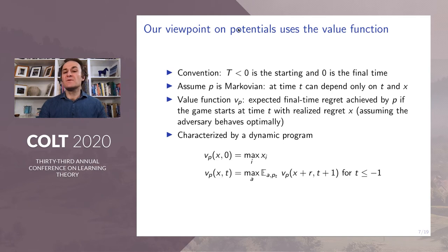That is, at time p can only depend on t and the cumulative regret x at that time. The value function v_p is the expected final time regret achieved by p if the game starts at t with realized regret x and assuming the adversary behaves optimally. It is characterized by the dynamic program.